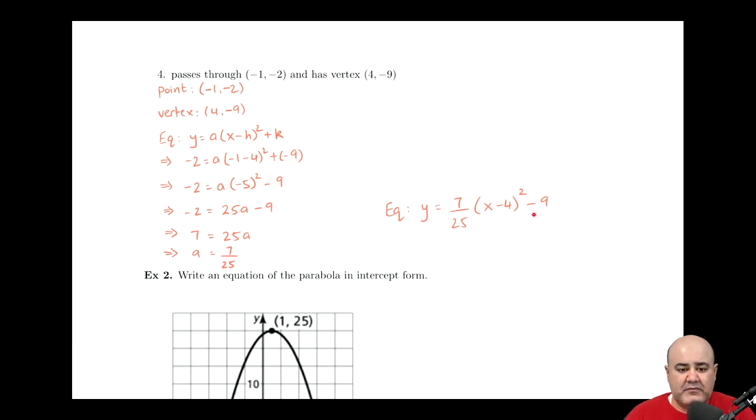As a result, we can write our equation in vertex form. It is y equals our value of a, 7 over 25, times the quantity x minus h, or 4, squared, plus k. Since k was negative 9, we have a negative 9 here.